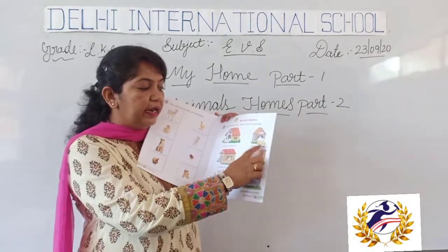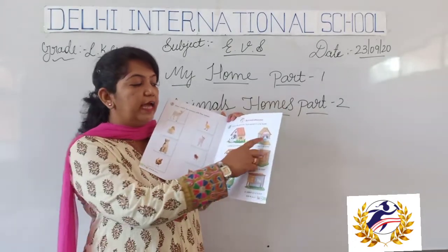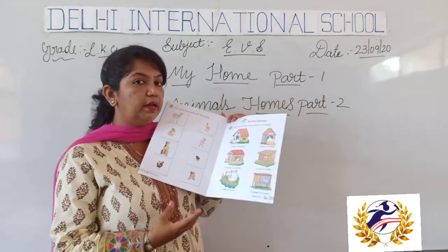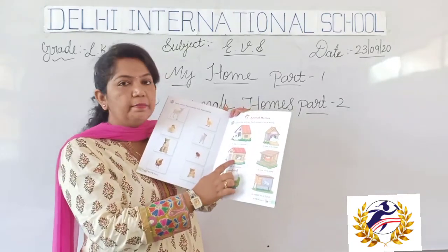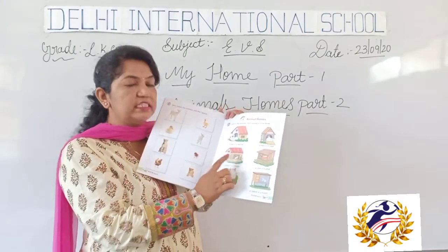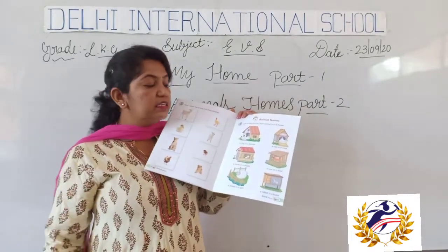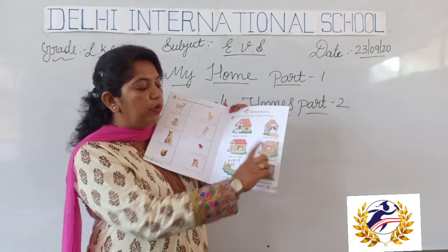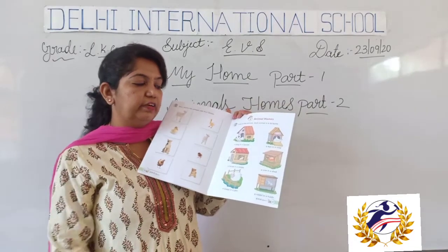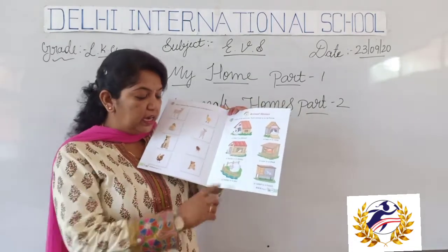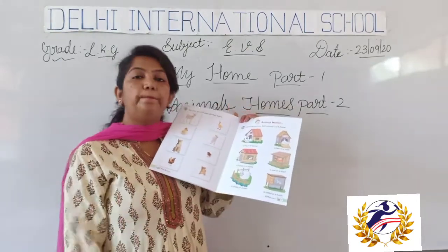Next, a hen in a coop — we will call the hen's house as coop. A horse in a stable — horse in a stable. A cow in a shed — we call the cow's house a shed.